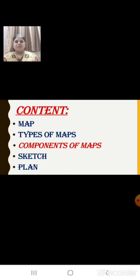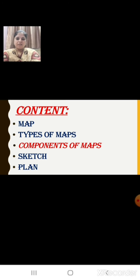In our previous class we had learnt about maps and the different types of maps. We had learnt that a map is a representation or a drawing of the earth's surface or a part of it, drawn on a flat surface — that means on a sheet of paper — according to a scale. And we learnt that maps are more helpful than a globe. A globe can be useful when we want to study the earth as a whole, but when we want to study only a part of the earth, maps are more useful, as they represent the entire earth's surface or a part of it. And we also learnt that an atlas is a collection of maps in a book.